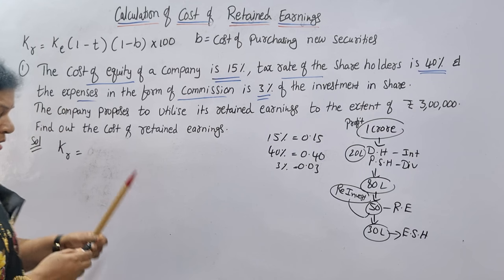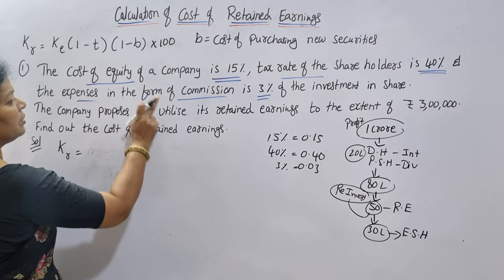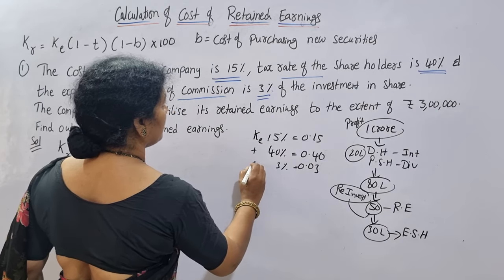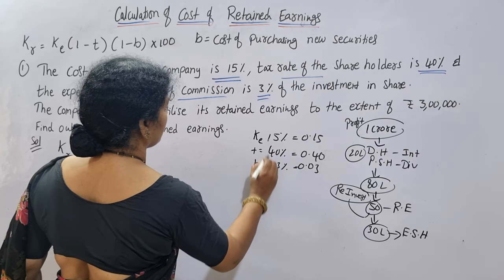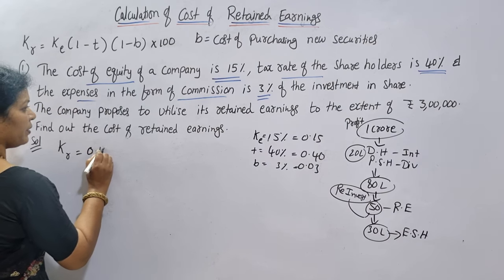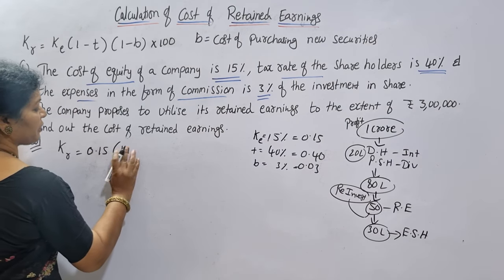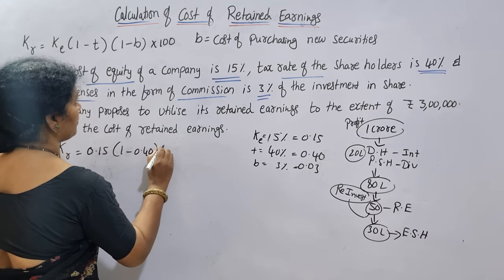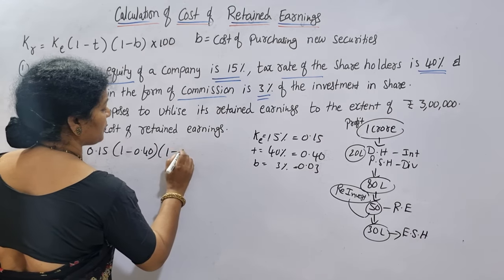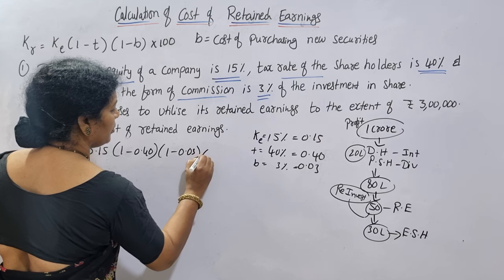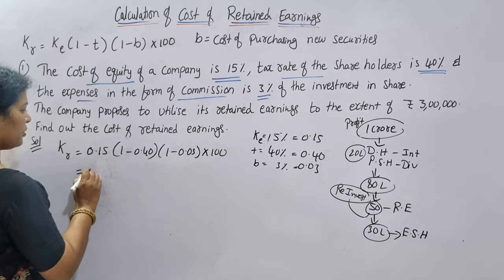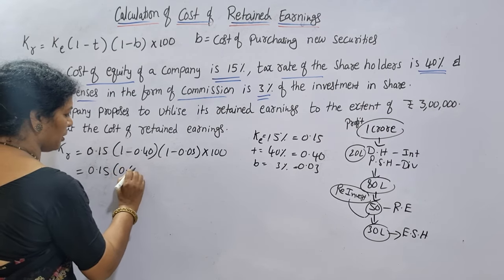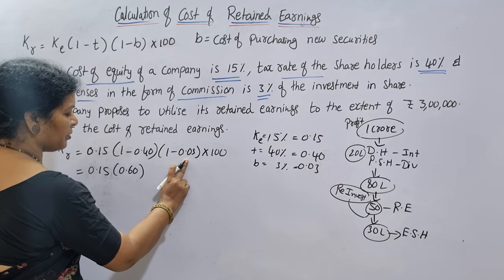The formula: KR is equal to KE. KE is 0.15. Multiply by (1 minus tax rate) — tax rate is 0.40, so (1 minus 0.40) is 0.60. Then multiply by (1 minus B) — B is expenses, 0.03, so (1 minus 0.03) is 0.97. Calculation: 0.15 into 0.60 into 0.97.